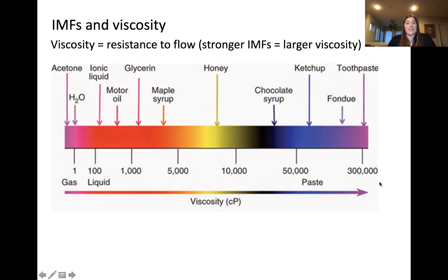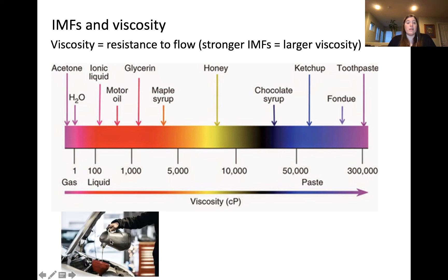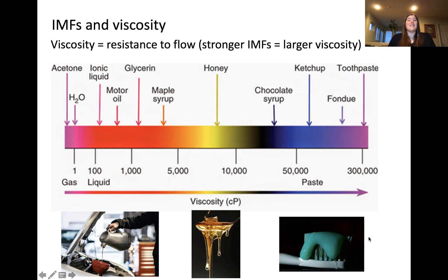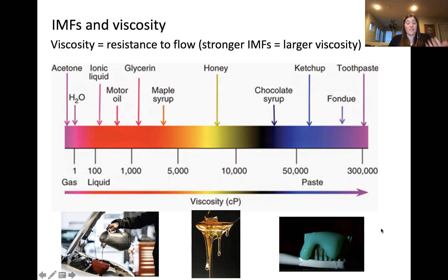Intermolecular forces are also related to viscosity, which is the resistance of a substance to flow. Stronger intermolecular forces correspond to greater viscosity. On one end we have substances that flow easily, and on the other end very viscous substances. For example, motor oil has a relatively low viscosity, honey has an intermediate viscosity, and substances like toothpaste have a very high resistance to flow.